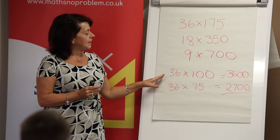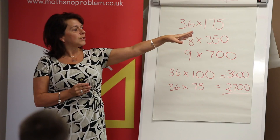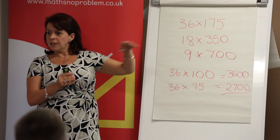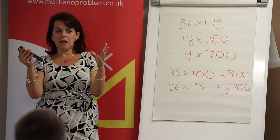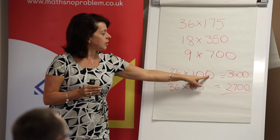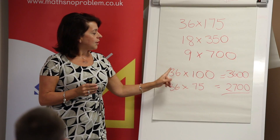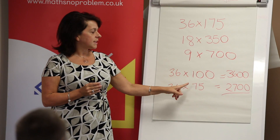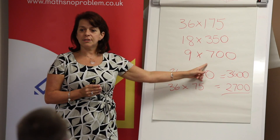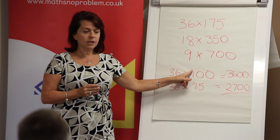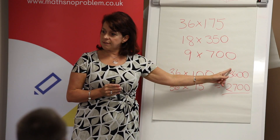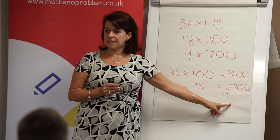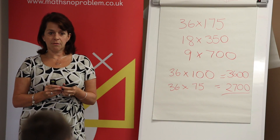The other way you could look at it is to think: I don't want to multiply by 175, that's horrible. So I'm going to split that 175 into 100 — which is easy — and I know that 75 is three-quarters of a hundred, so I could take three-quarters of that answer, add it together, and get 6300.